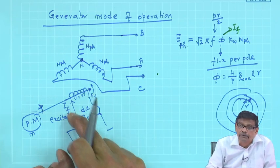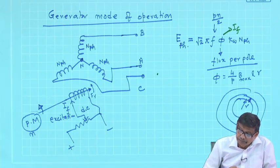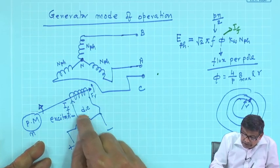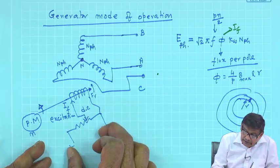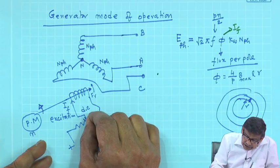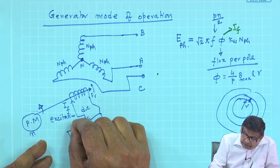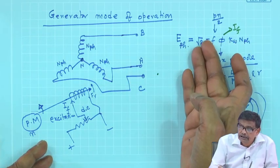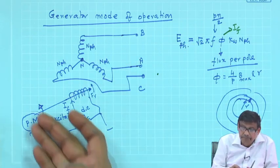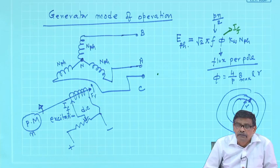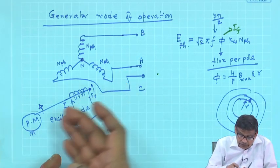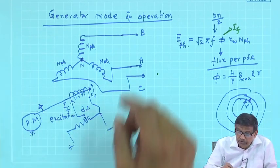If field current is zero, there will be no induced voltage. Increase the field current using a potential divider — your flux per pole increases and the induced voltage is directly proportional to it, while speed is kept constant. If you want to generate 50 Hz voltage, you must drive at the correct speed, calculated as n = 2f/P.